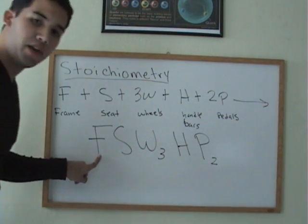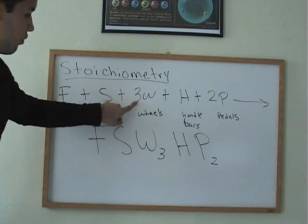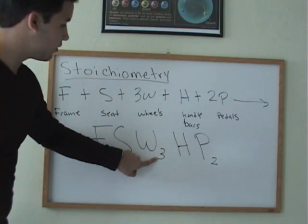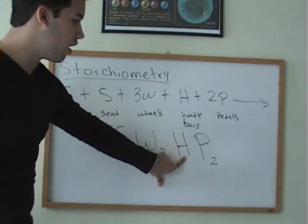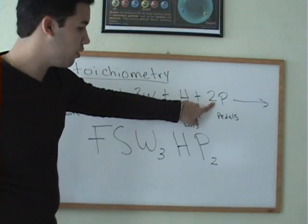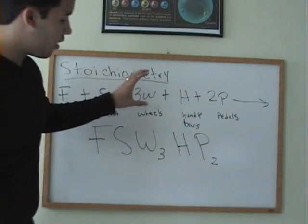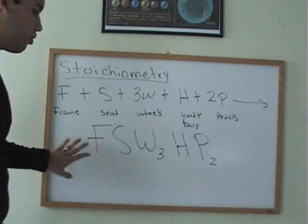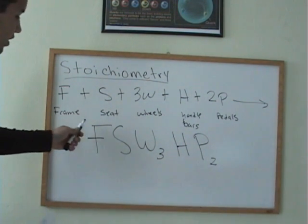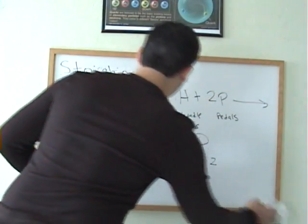We have one frame here, one frame here. We have one seat, one seat, three wheels, three wheels. We have one handlebar, one handlebar, and two pedals, and two pedals. So, our reactants are balanced with our products. This is the formula that we're going to end up using to solve this problem.